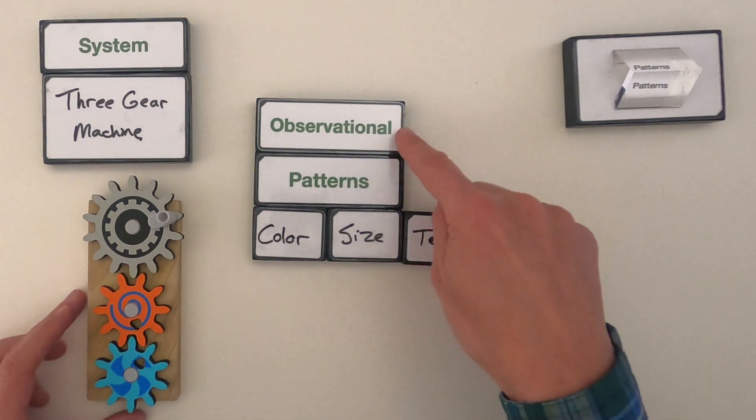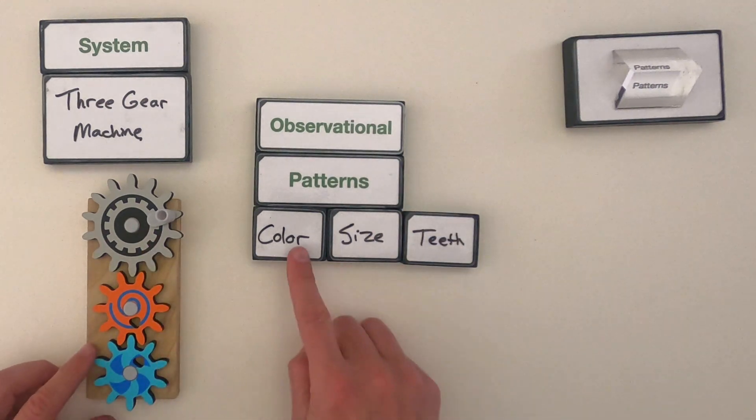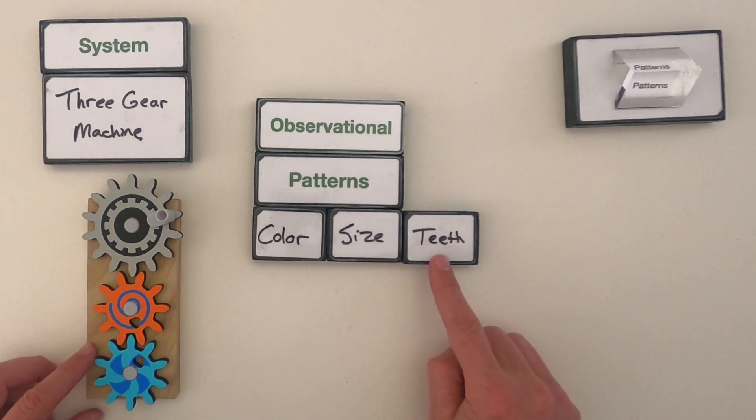I noted right away just observing that each of these gears have a different color, different sizes, and different number of teeth.